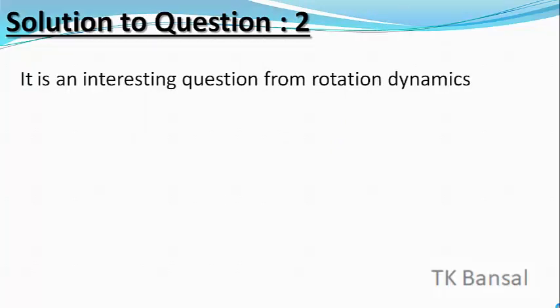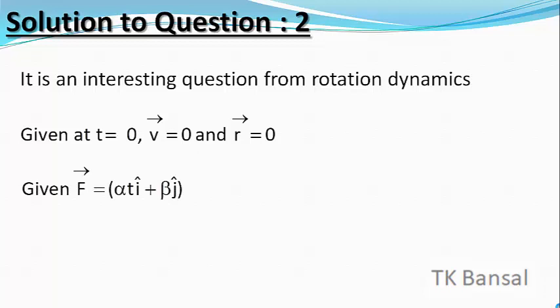Given: at t = 0, the particle is at rest at the origin. The applied force F vector equals alpha·T î + beta ĵ Newtons.